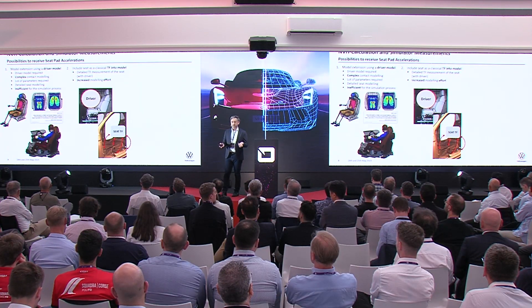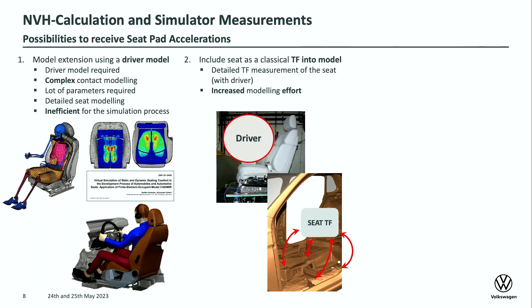The next step would be to perform a measurement of the seat with a driver on it, using seat pads, and measure the transfer functions of the seat in the several directions — X, Y, Z — at several points. You perform a seat transfer function, and then the calculation engineer has to remove the seat from the car structure, which was previously in it, and put in the seat transfer function. This is quite a large effort regarding calculation and modeling.